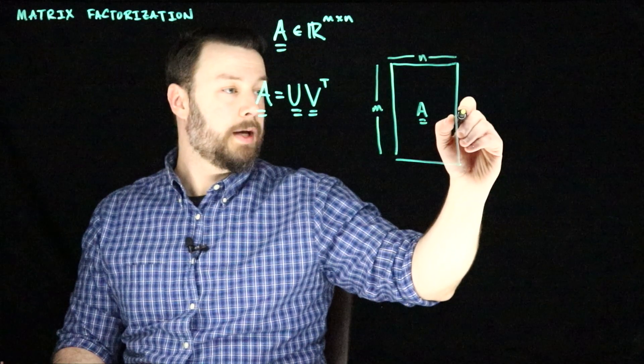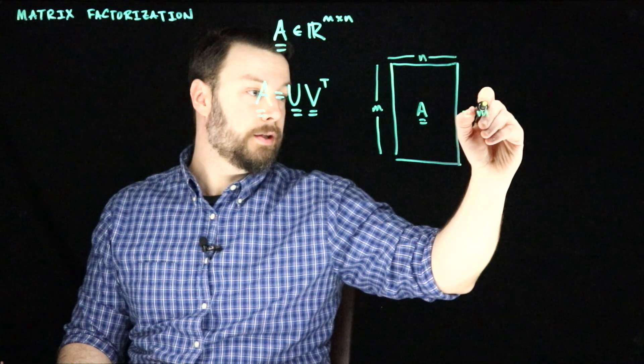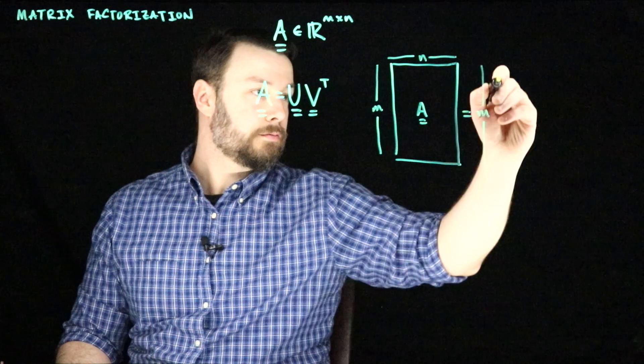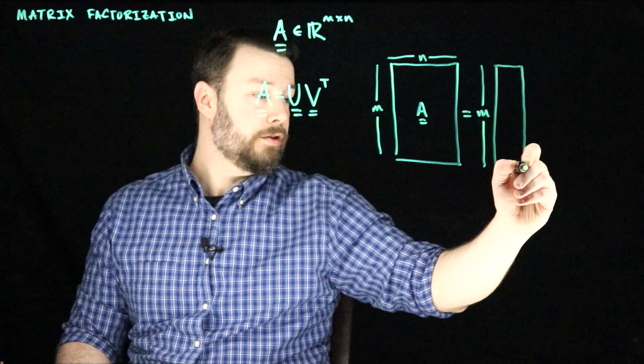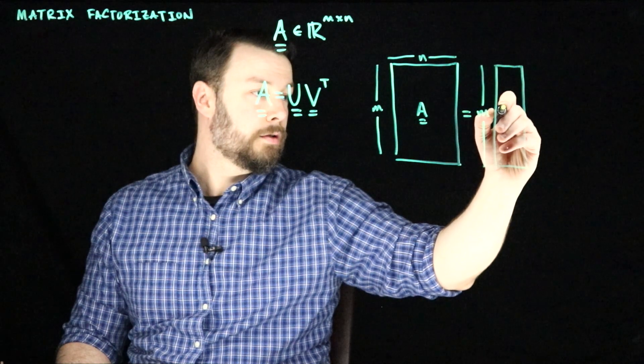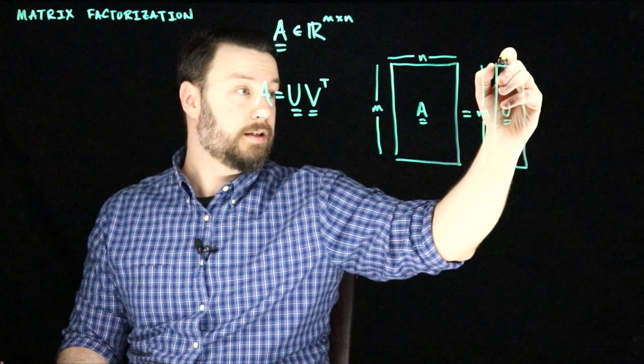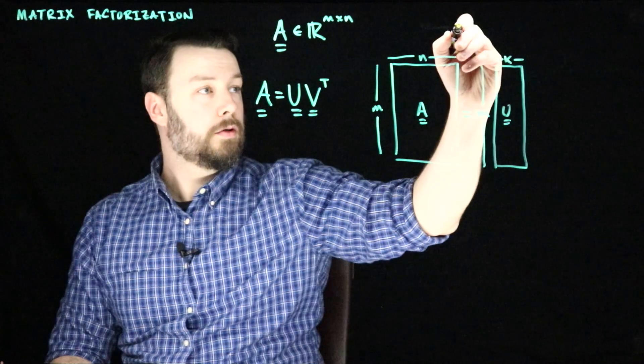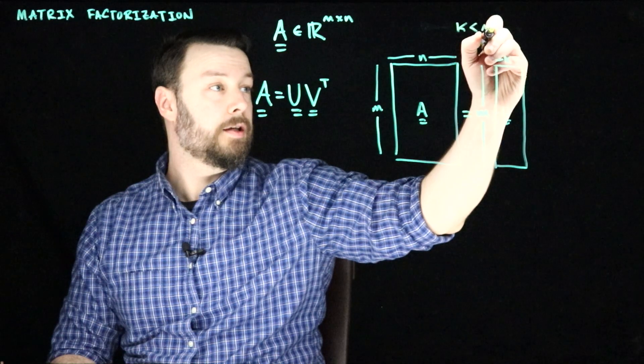And we're going to imagine that A is low rank. And so there's some other matrix, U, and U is M by K, where K is less than both M and N.